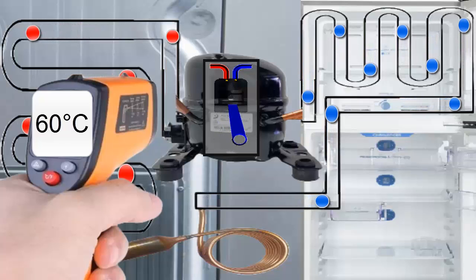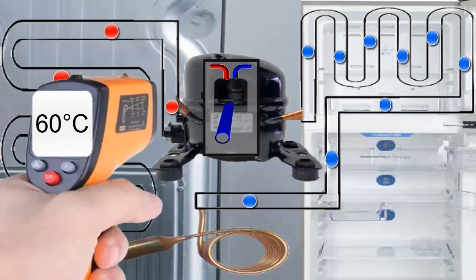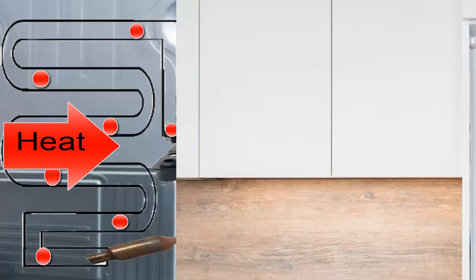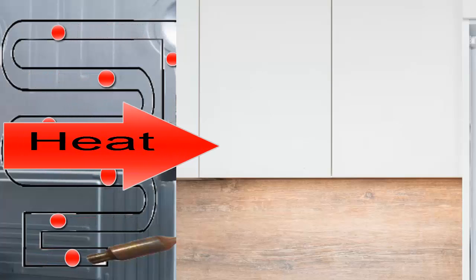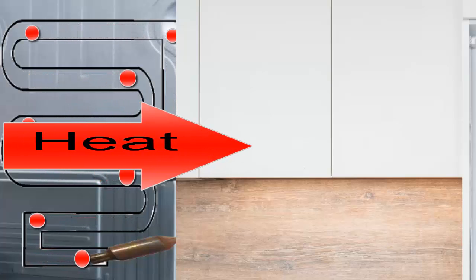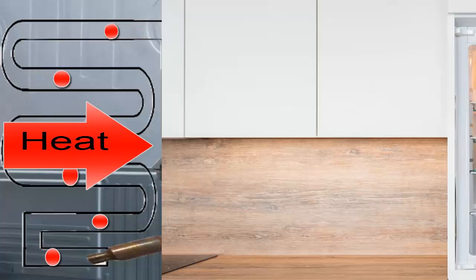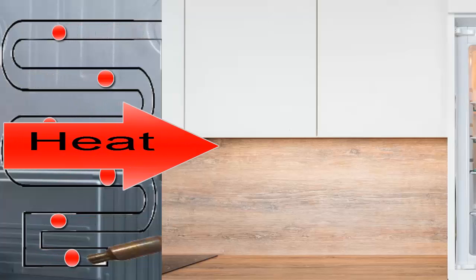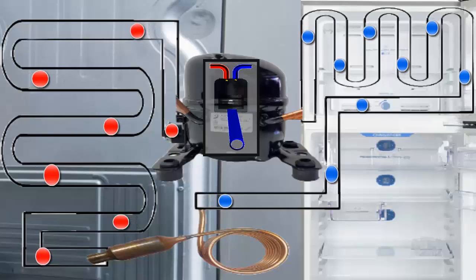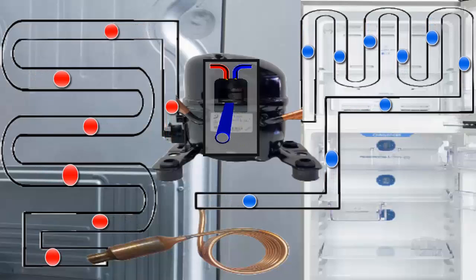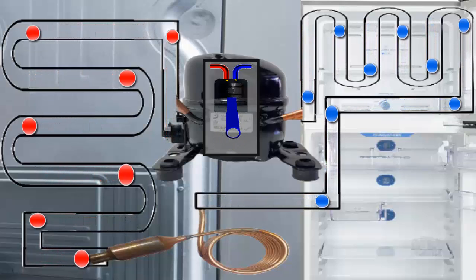In the condenser, the refrigerant must lose the heat absorbed from the food and the energy absorbed in the compressor. This heat must be expelled into the environment. This heat dissipation process is favored by the high pressure that the R404A refrigerant gained in the compressor.